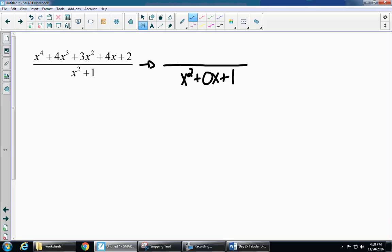My numerator starts with x to the fourth, and it goes x to the third, x to the second, x to the first, and no x's. So my numerator is good, and I can keep that. I don't need any placeholders.